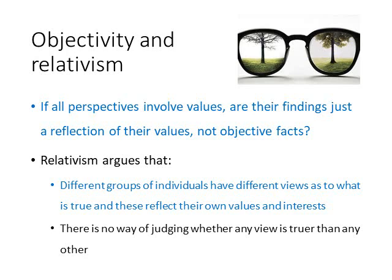What we arrive at here is perhaps relativism. Relativism argues that different groups of individuals have different views as to what is true, and these reflect their own values and interests. Therefore there is no way of judging whether any view is truer than any other — they are just different sets of opinions, and no group's opinions are more important than another's. This is also hints of post-modernism, where truth is relative to — or subjective to — those who believe it or wish to believe it.